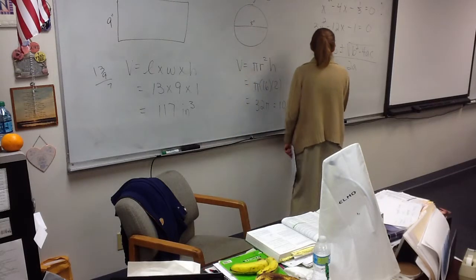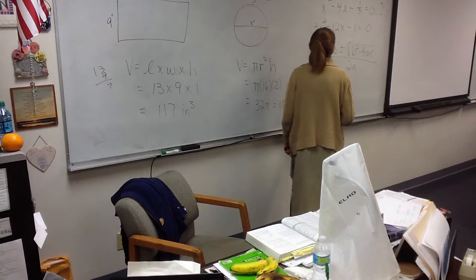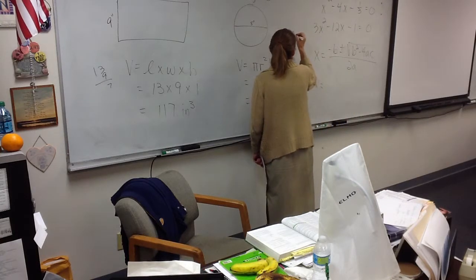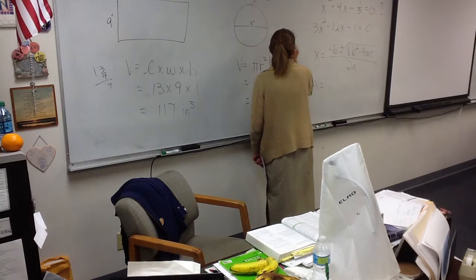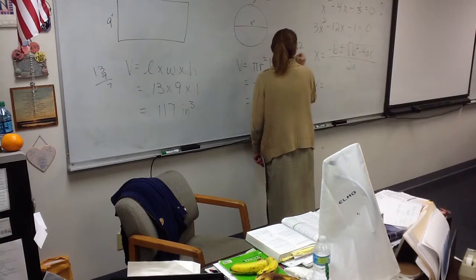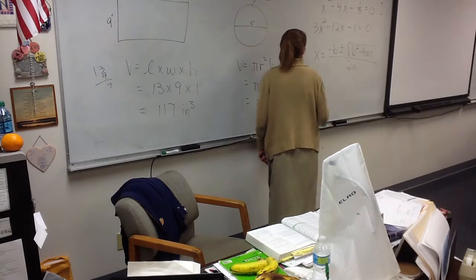X equals. Here we go. I'm going to write down my A, B, and C. What's my A? Three. What's my B? Negative 12. What's my C? Perfect. Now, I'm glad we're doing this because, again, some of you made a mistake on your test. We need to get it worked out.